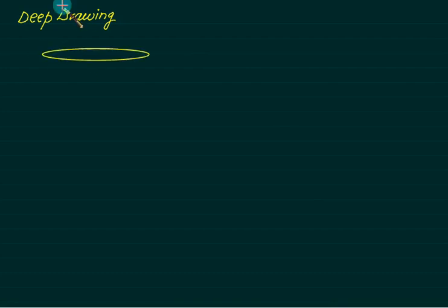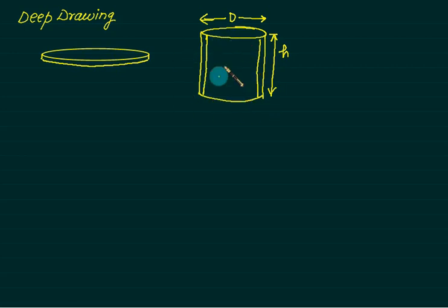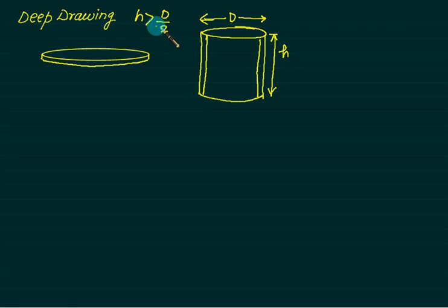We start with a circular blank of very small thickness. From this blank we want to make a cup product with a certain height and diameter D. When this operation is performed with the top open, solid base, and solid walls, it is called a deep drawing operation. For deep drawing, the height h must be greater than the diameter divided by 2. The blank diameter is called Db, and the cup diameter is Dc.